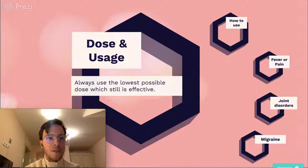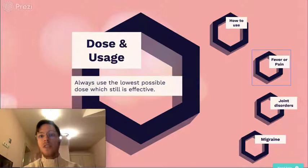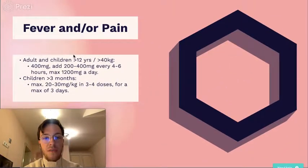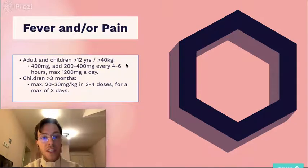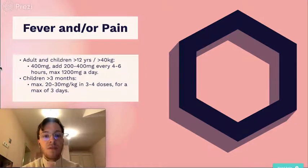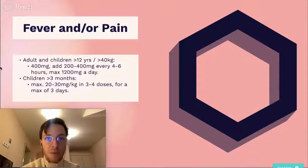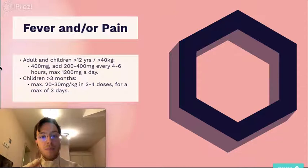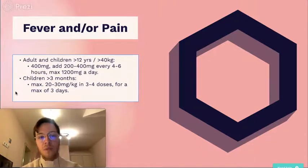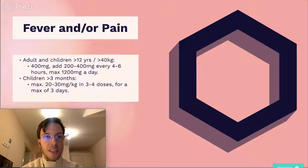Let's get to the dosages. When using ibuprofen for fever or pain in adults and children older than 12 years or more than 40 kilograms, use 400 milligrams and add 200 to 400 mg every 4 to 6 hours if necessary, to a maximum of 1200 milligrams per day. If your child is older than 3 months, the maximum is 20 to 30 milligrams per kilogram in 3 to 4 doses for a maximum of 3 days.